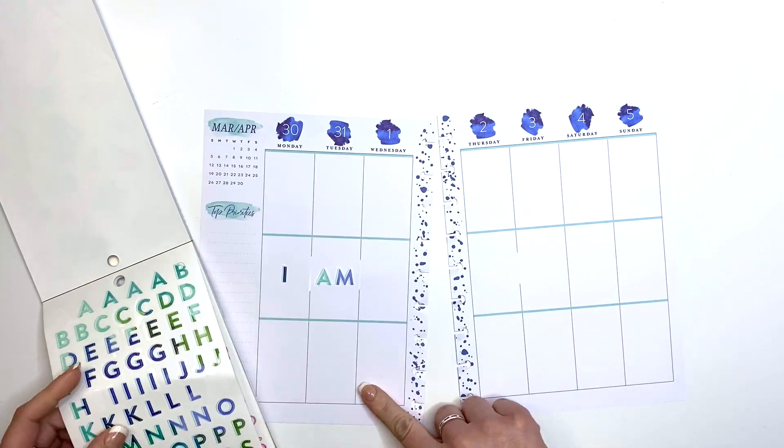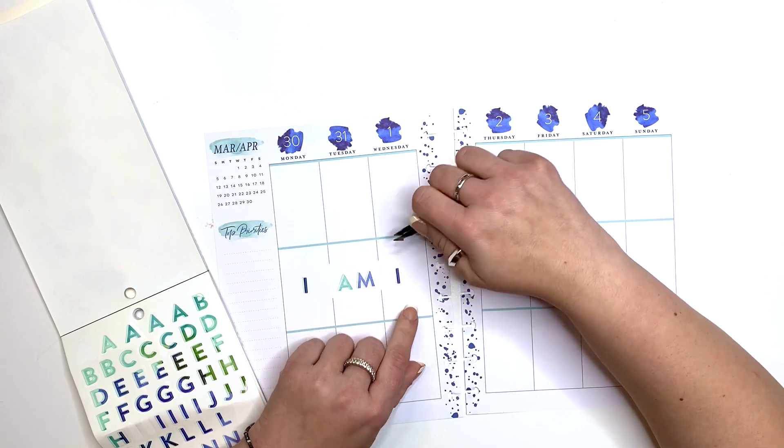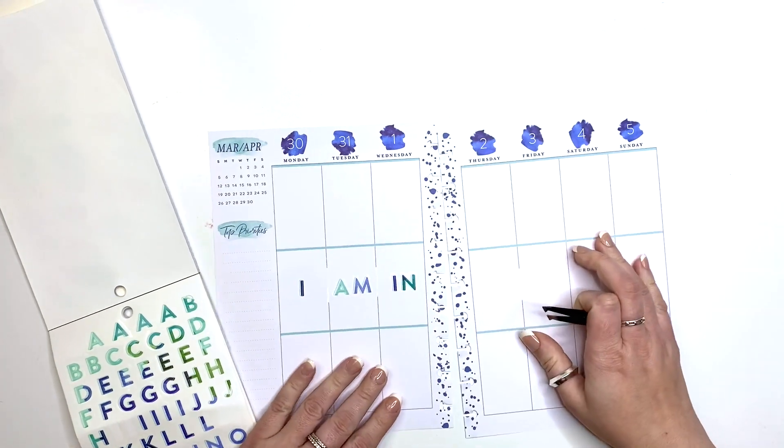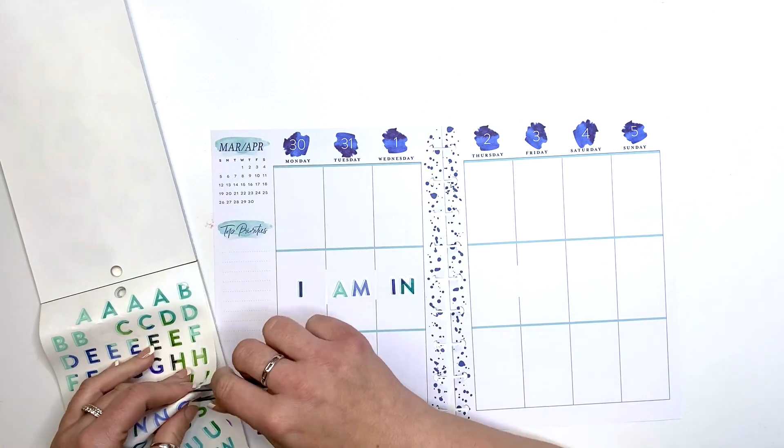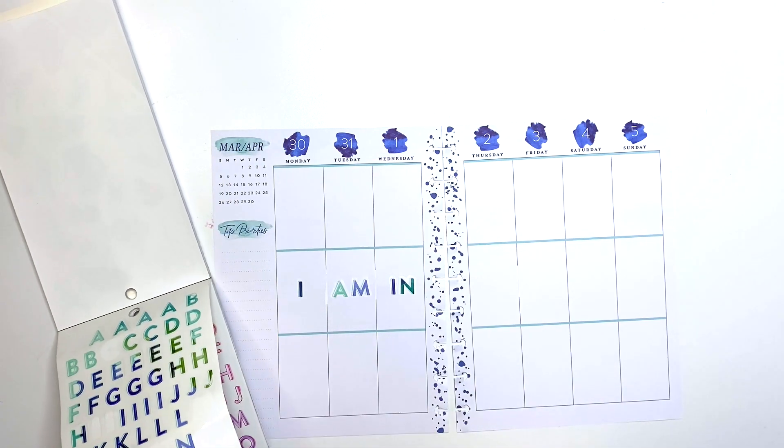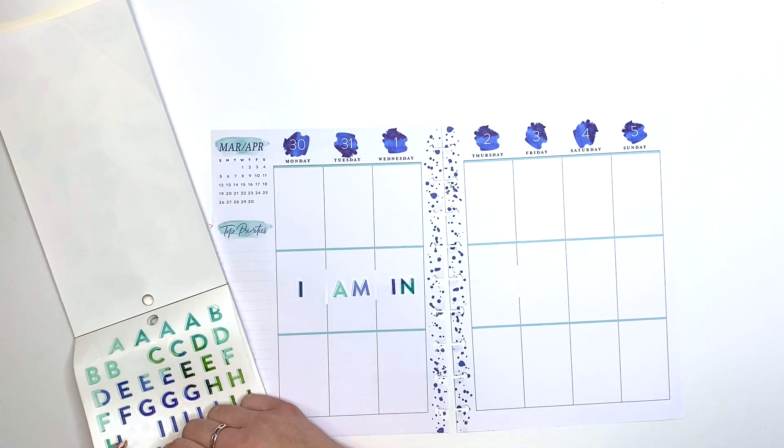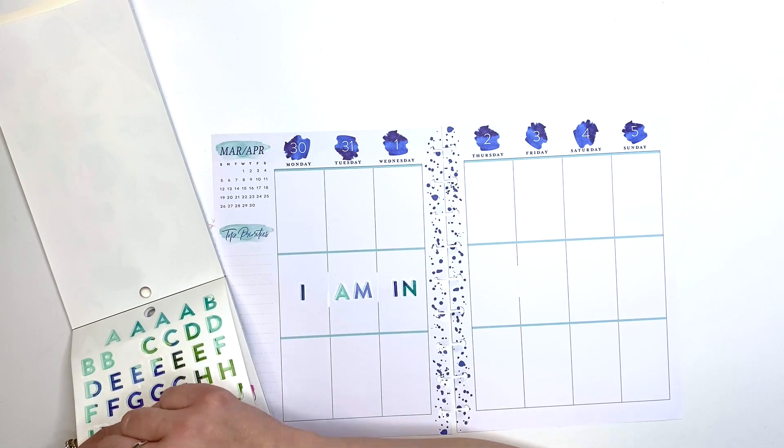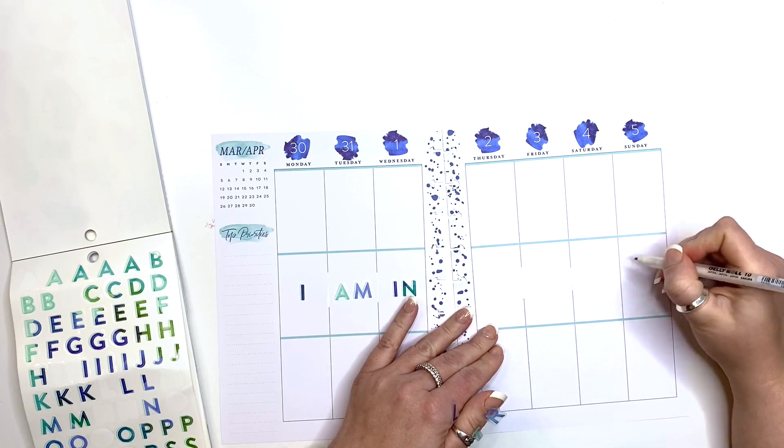The challenge that we're doing this week is called You're in Control. What we asked everybody who participated to do was to go ahead and create a spread that means control to you. This challenge was prompted by the fact that on Monday the target is I Am in Control Day, so we created a similar challenge saying you're in control and to show us what that means to you.